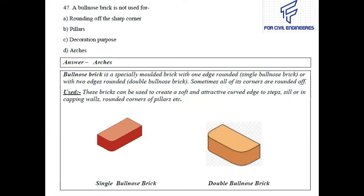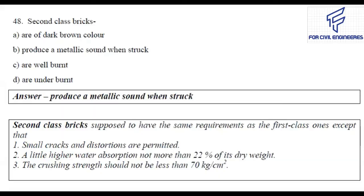Question number 47: A bullnose brick is NOT used for — rounding of corners of pillars, decoration purpose, or arches? The right answer is arches. Bullnose brick is a specially molded brick with one edge rounded, called single bullnose brick, or with two edges rounded, called double bullnose brick. Sometimes all of its corners are rounded. These bricks can be used to create a soft and attractive cut edge, two steps, sill, capping walls, and rounded corners of pillars.